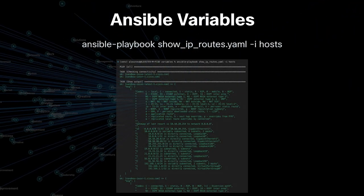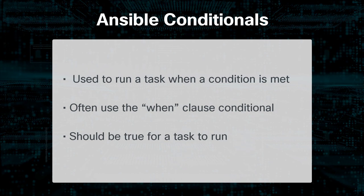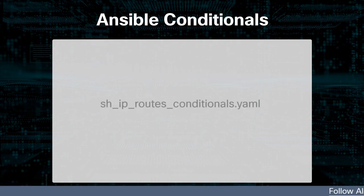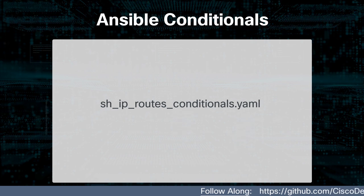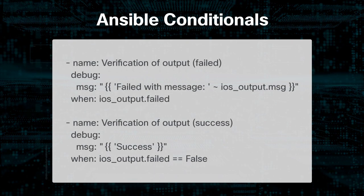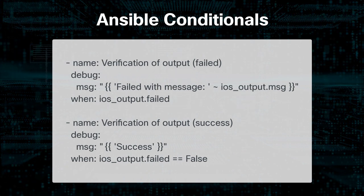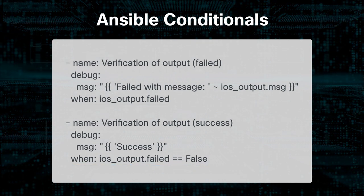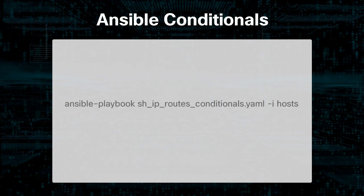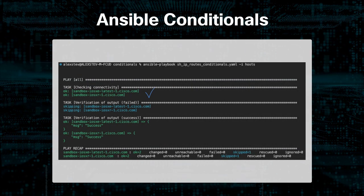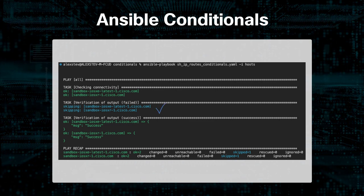In Ansible, conditionals are used to run a task when a condition is met. We often use the when clause — the conditional should be true for a task to run. We create a new playbook similar to our show-ip-routes playbook but remove the show output task to focus on conditionals. Instead, we add two tasks to the end of the playbook: Ansible will skip over the one that is false and run the one that is true, based on the logic of the when conditionals. Running the playbook, we can see the connectivity check ran smoothly, the failed verification task was skipped, and the success task ran.